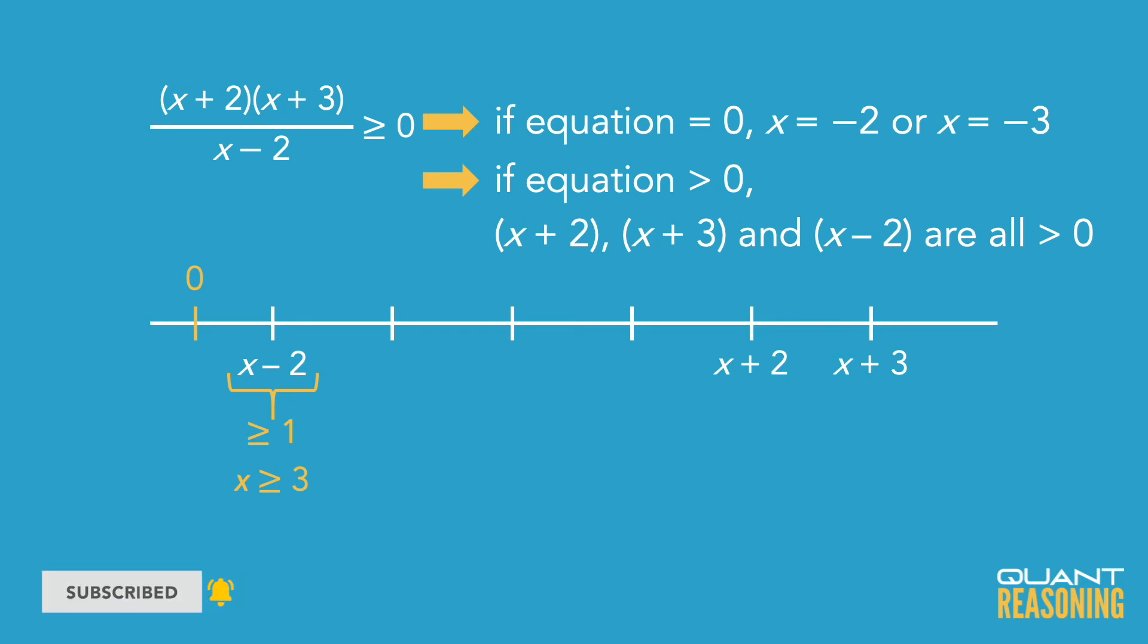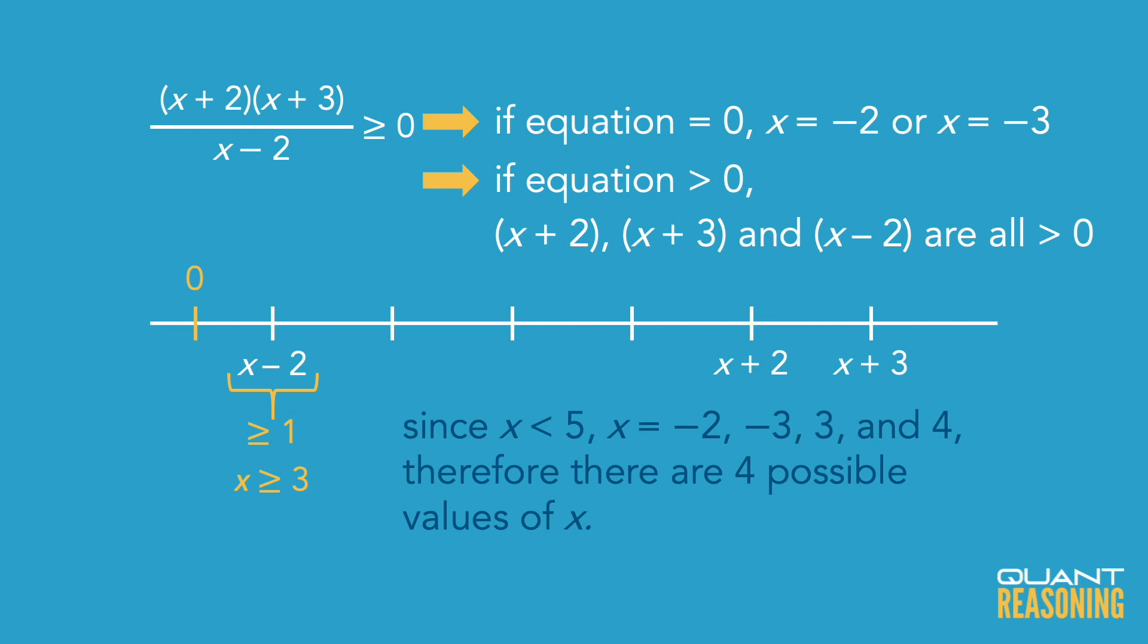So in the end of the day, what are our solutions? I'm looking back at my paper, I had there a negative 2 and a negative 3, and now we also have a 3 and a 4, and that's it. So I'm counting a total of four possible values of x to solve this inequality.